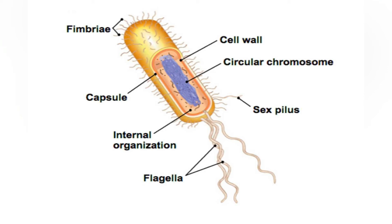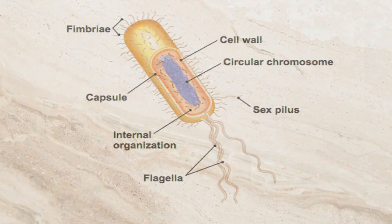Fimbria are required for the formation of biofilm, as they attach bacteria to host surfaces for colonization during infection. Fimbria are either located at the poles of a cell or are evenly spread over its entire surface. This term was also used in a lax sense to refer to all pili, by those who use pilus to specifically refer to sex pili.